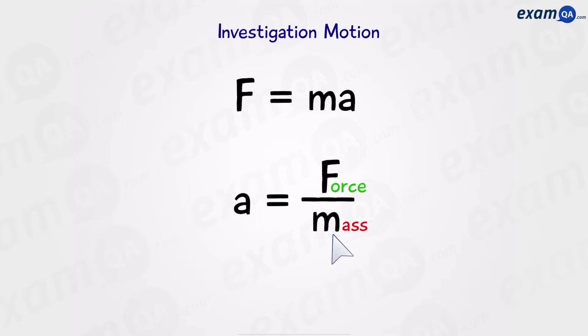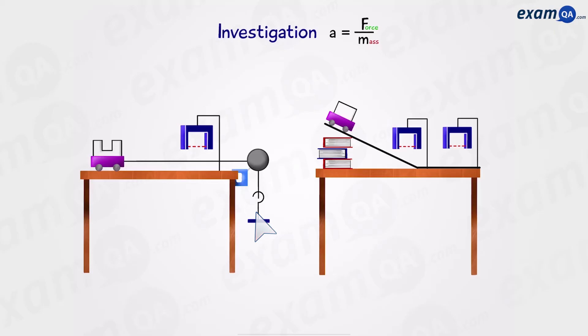From this equation we can see that if force increases, that will increase the acceleration. And if mass increases, it will decrease the acceleration. So let's see how we can prove this using a practical method. There are two ways of proving this: the method on the left or the method on the right. Let's look at the one on the left to start with.